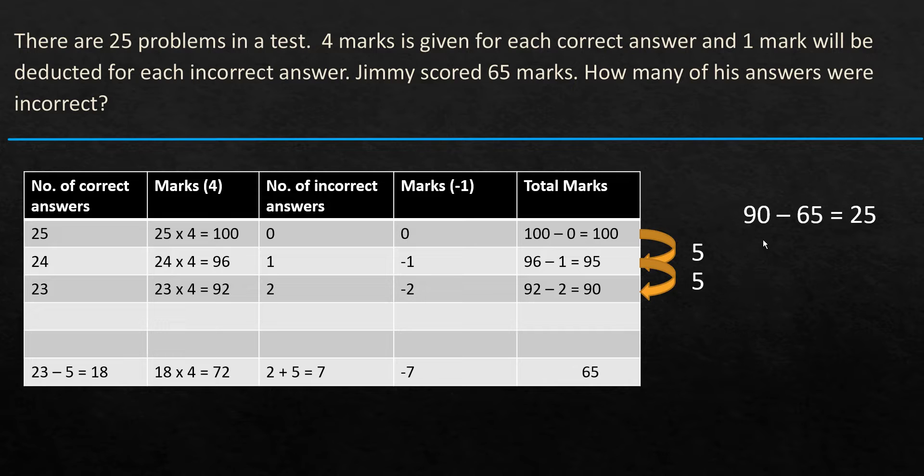So what we need to do here is 90 minus 65 equals 25. So there are 25 marks between 90 and 65. And every time you jump, we actually have 5 reduced. So 25 divided by 5 is equal to 5, which means we just have to do 5 jumps down.